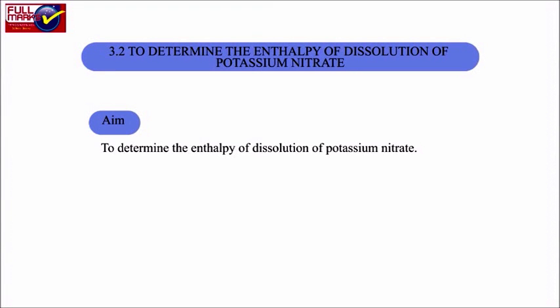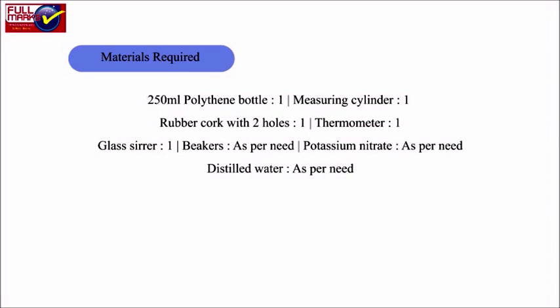Experiment 3.2: To determine the enthalpy of dissolution of potassium nitrate. Aim: To determine the enthalpy of dissolution of potassium nitrate. Materials Required: 250 ml polythene bottle, measuring cylinder, rubber cork with two holes, thermometer, glass stirrer, beakers, potassium nitrate, and distilled water.